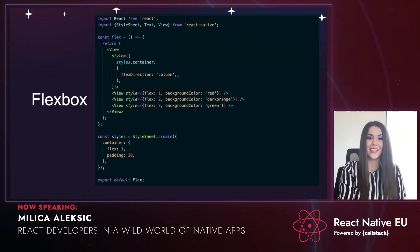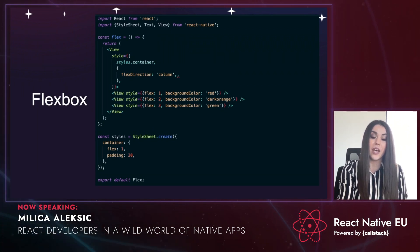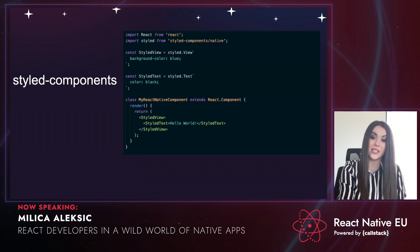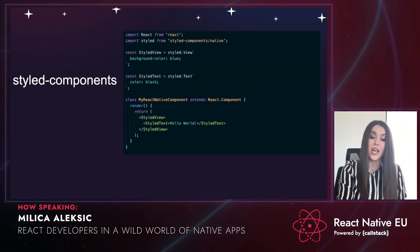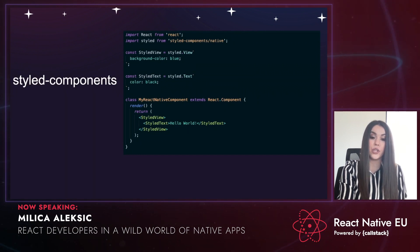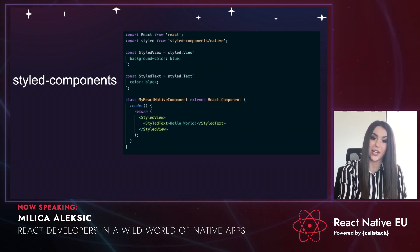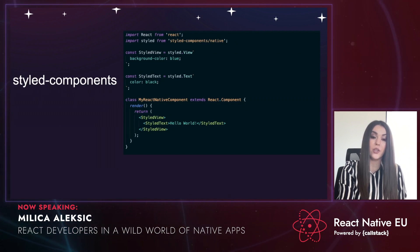Under the hood, flexbox is implemented with Yoga. You can also use the popular CSS-in-JS library styled-components, which allows you to write actual CSS code to style your components. The benefits include CSS syntax out of the box, dynamic styling, theming, and support for more complex styles like transforms. If you're already familiar with styled-components from the web, I'd recommend using it.